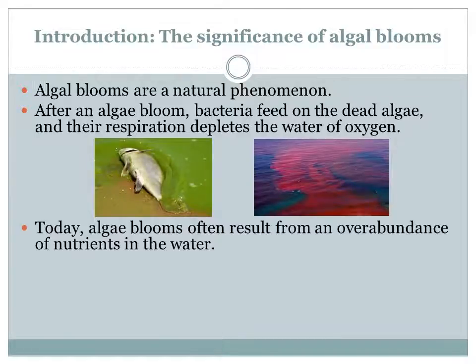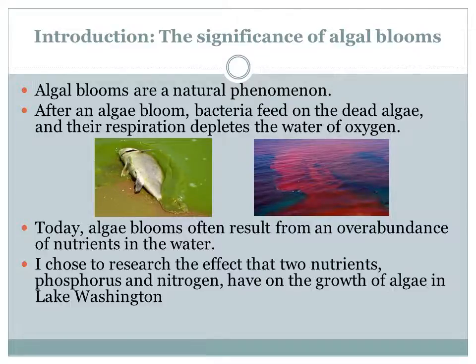The United Nations reported that the number of dead zones around the world has doubled every 10 years since 1960, and one study found that almost half the lakes in the United States are in less than good condition as a result of an overabundance of nutrients. So I chose to research the effect that two nutrients, phosphorus and nitrogen, have on the growth of algae in Lake Washington.